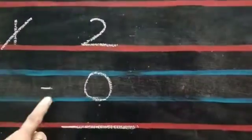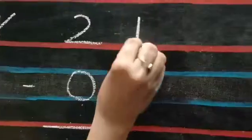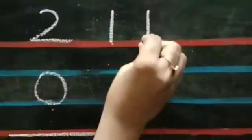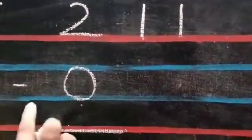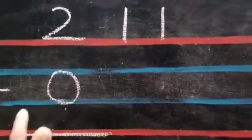Children, now the third sum is 2 minus 0. 2 means draw 2 lines. 1, 2. Take away 0. Take away 0 means nothing.